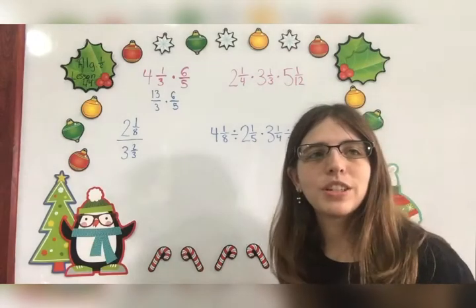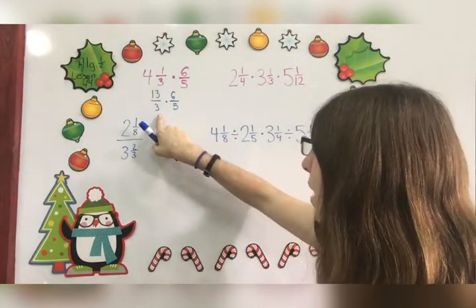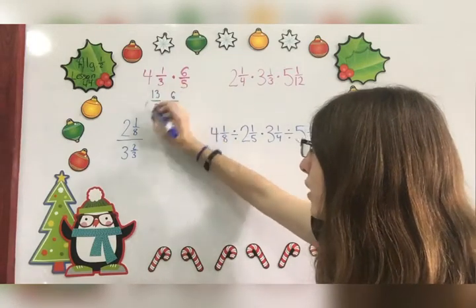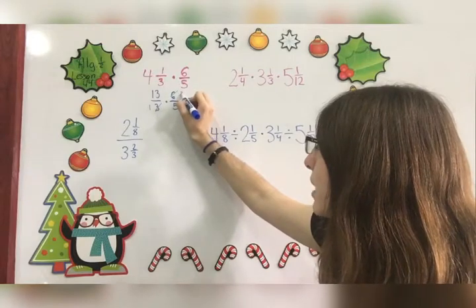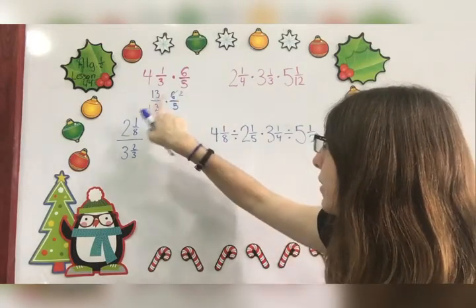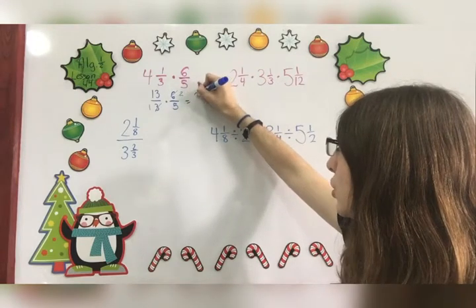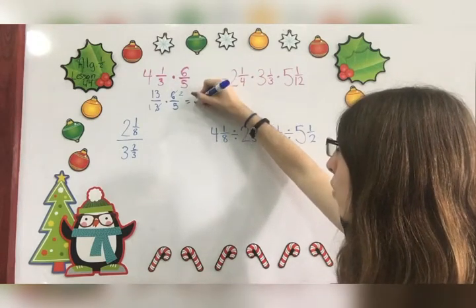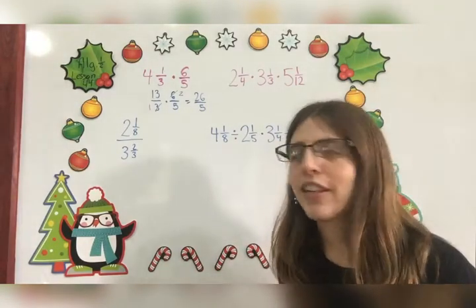Multiply that by 6/5. First, I'm going to see if there's anything that I can cancel. I can cancel my 3 and my 6 because they have 3 as their greatest common factor. 3 divided by 3 is 1, 6 divided by 3 is 2. I can't cancel anything else, so now I'm going to go ahead and multiply. 13 times 2 is 26, 1 times 5 is 5.